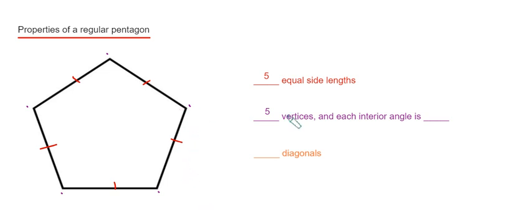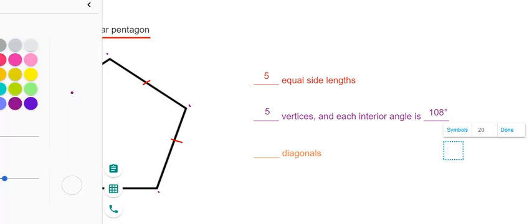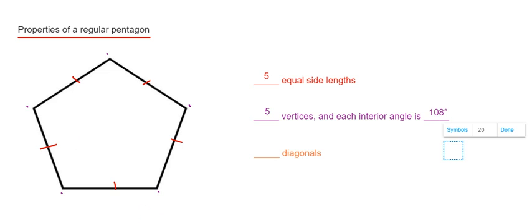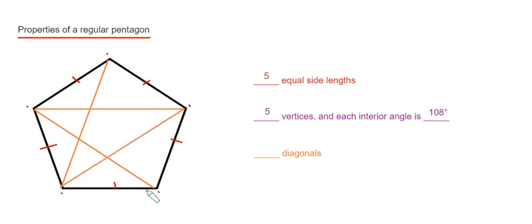of the regular pentagon is 108 degrees. And the final thing then is let's look at the number of diagonals. So the diagonals go from one vertex to another vertex. We have one, two, three, four, five.